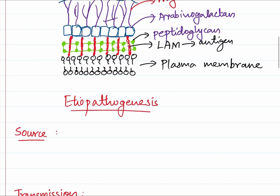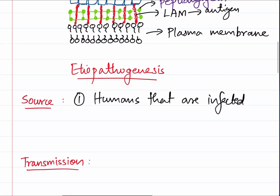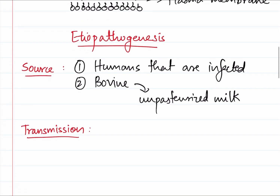Now let's talk about the etiopathogenesis. The first and primary source of infection are humans - infected humans are the primary source. And then there is the bovine source, that is from cows. As I've said, this is nearly eradicated now and reduced in most parts of the world. Consumption of unpasteurized milk will lead to entry of Mycobacterium bovis.